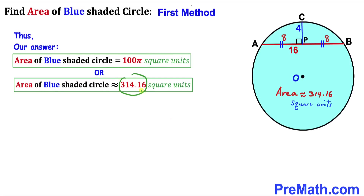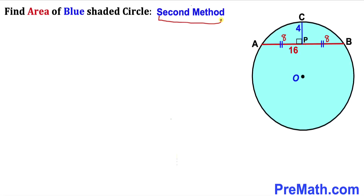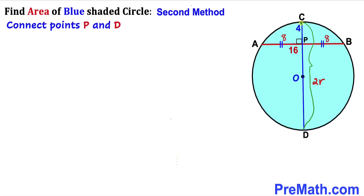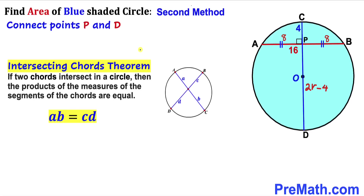Now for the second method. We connect point P with point D on the circle, as you can see in this diagram. Since CP is a perpendicular bisector, it passes through center O. OC and OD are both radii, so CD is a diameter equal to 2r. We know CP is 4 units, so the length PD is going to be 2r minus 4.